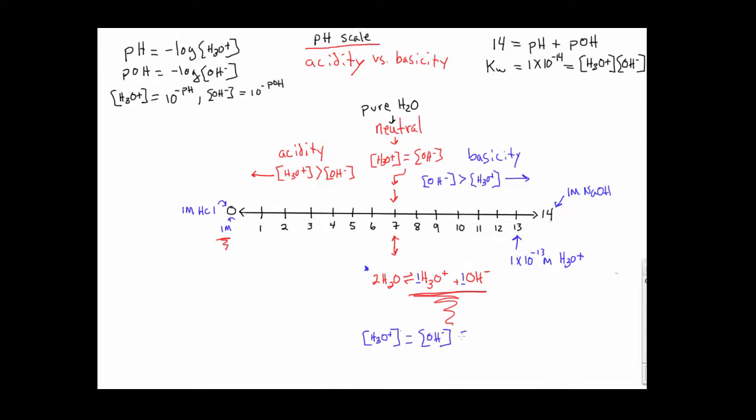We arrive at pH 7 because we can take minus the log of this value, and that gives us the center of the scale.